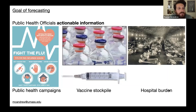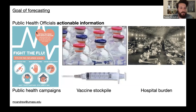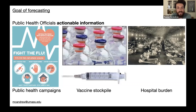The goal of forecasting is to provide public health officials actionable information they can use to make decisions. Examples include public health campaigns such as fighting the flu — get vaccinated, wash your hands, don't touch your face, stay at home, cover your cough. Another way forecasting helps is ensuring there's enough vaccine stockpile in the right places at the right time. A third way is to measure hospital burden and make sure there's enough support in hospitals to meet demand.